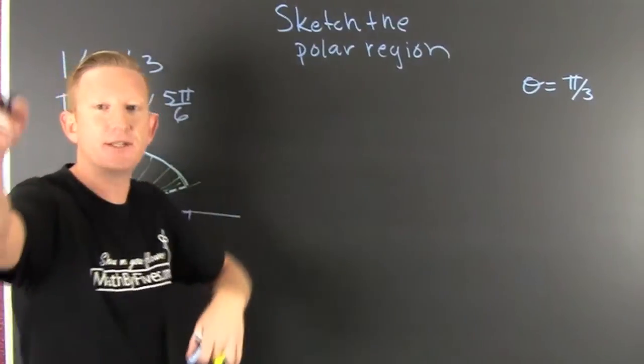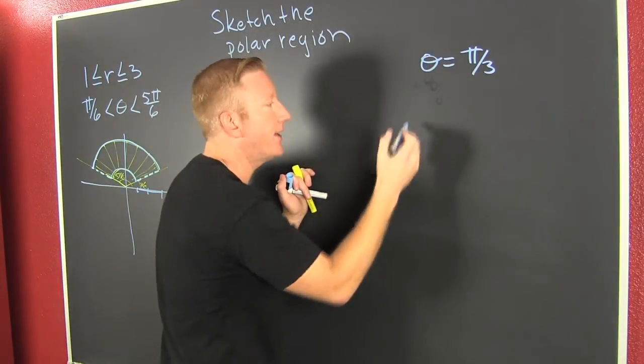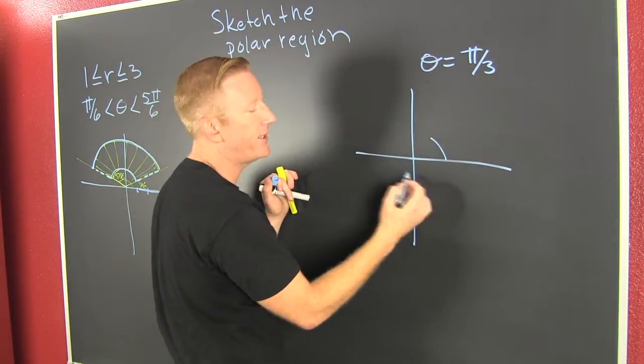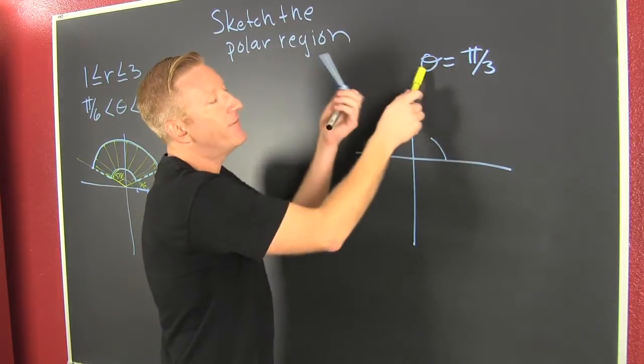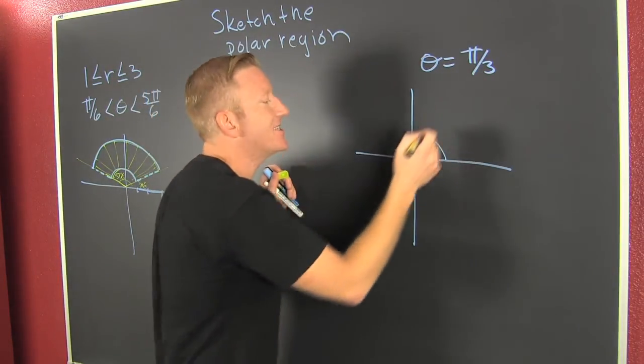Now let's go over and see another example. Here I have a fixed theta. What does that look like? I'm going to fix my theta at π/3. That's right here. And when I do that, I have no restrictions on r. But this is a line.